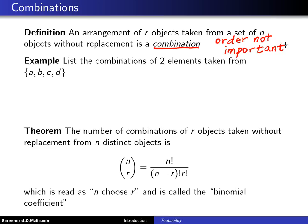So here is an enumeration example just to get things started. List the combinations of two elements taken from a, b, c, and d. So in this case we've got n is equal to 4 and we're trying to take them two at a time. So r is equal to 2. So let's list them out.